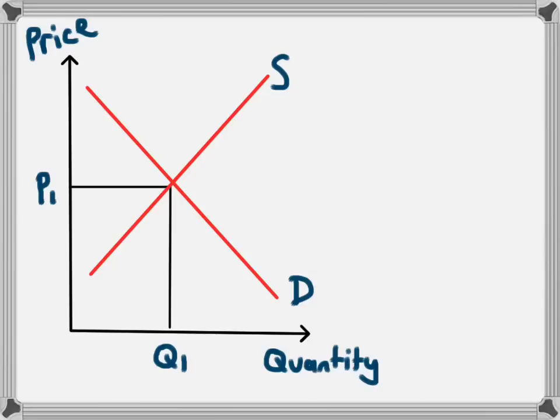In the same way that demand could increase, demand could also fall. For example, if there was a decrease in incomes or if the price of a substitute decreased, people would demand less of this product. Those decreases in demand will lead to a new demand curve and again our demand curve will move from D1 to D2, shifting to the left.